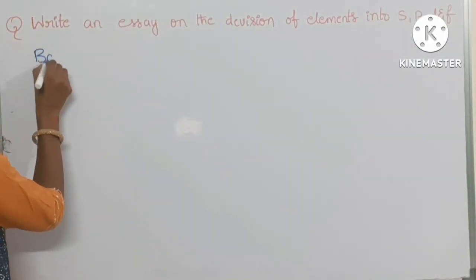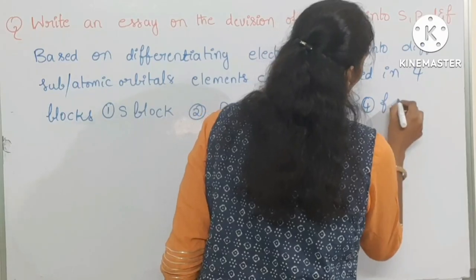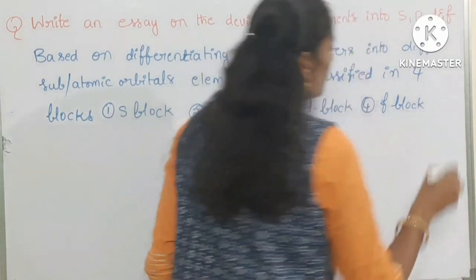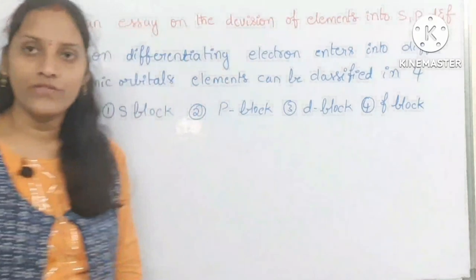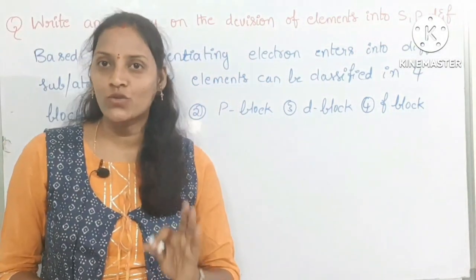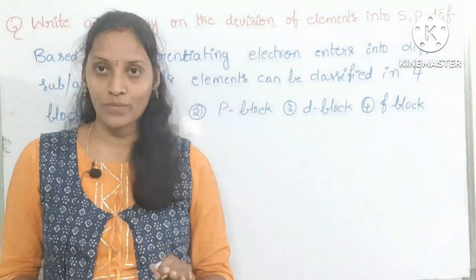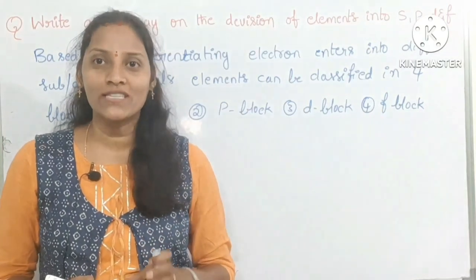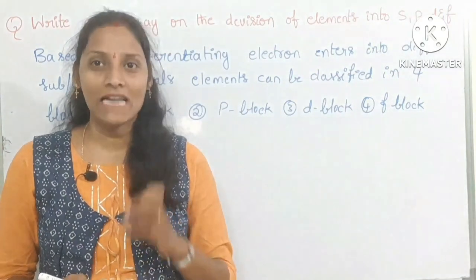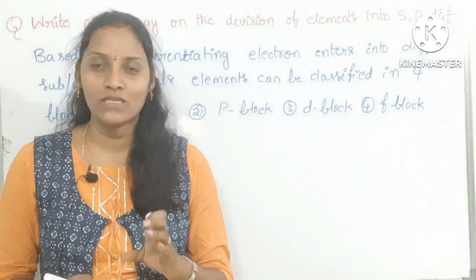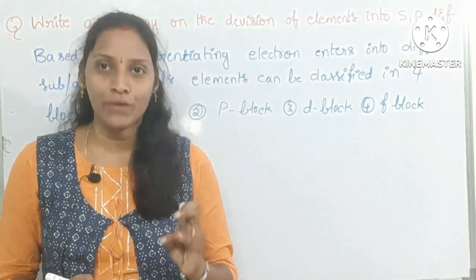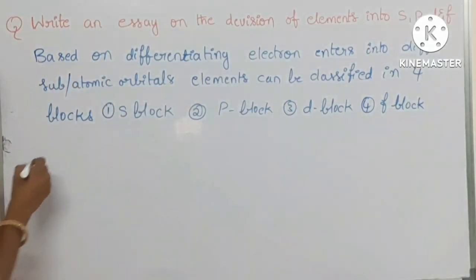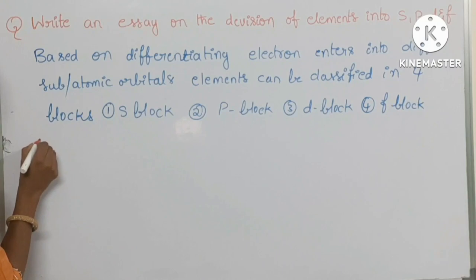Based on the differentiating electron — that is, based on which subshell the differentiating electron enters into — the elements present in the periodic table can be classified into four blocks: s block, p block, d block, and f block.